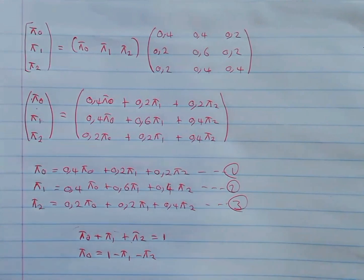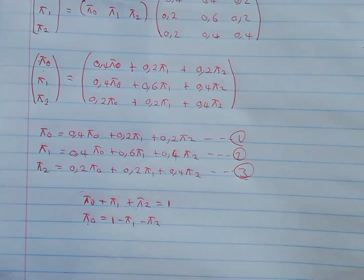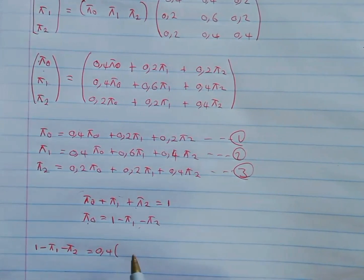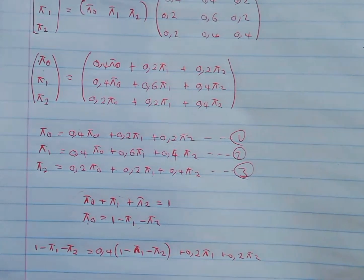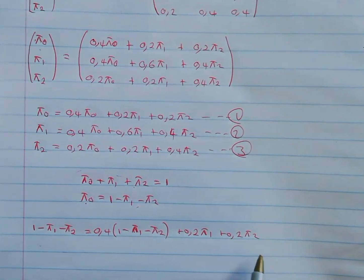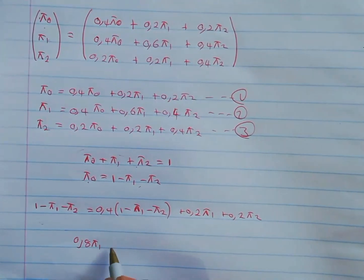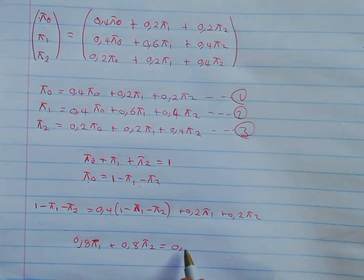Substituting π₀ = 1 − π₁ − π₂ into equation 1: (1 − π₁ − π₂) = 0.4(1 − π₁ − π₂) + 0.2π₁ + 0.2π₂. Simplifying this gives: 0.8π₁ + 0.8π₂ = 0.6. Let this be equation 4.